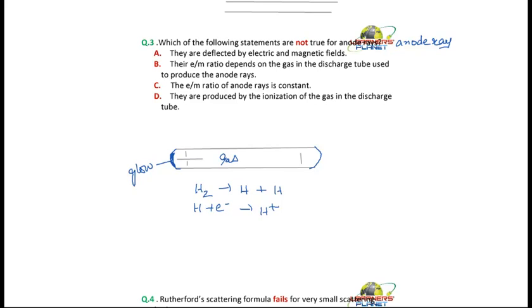Now students, this gas molecule can be anything. It can be nitrogen or oxygen or any gas molecule. So there will be rays. This will give rise to anode rays.